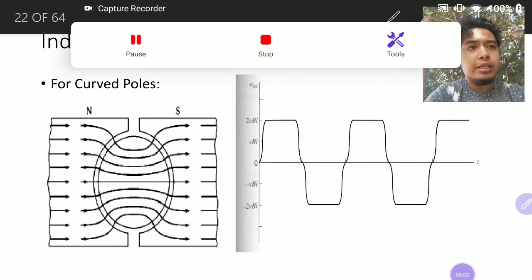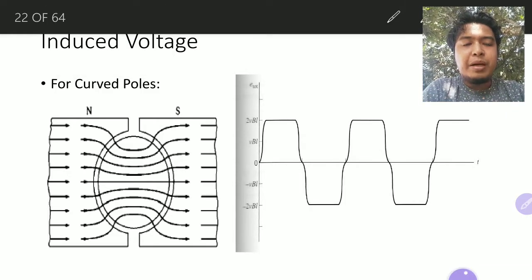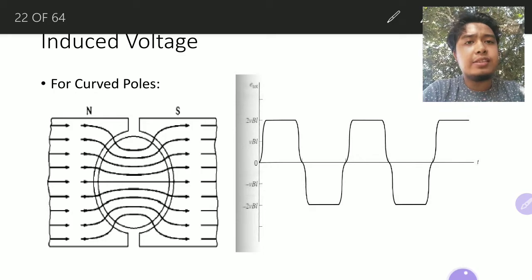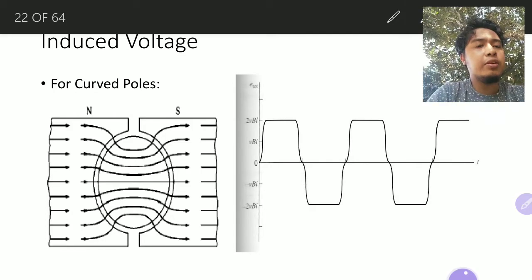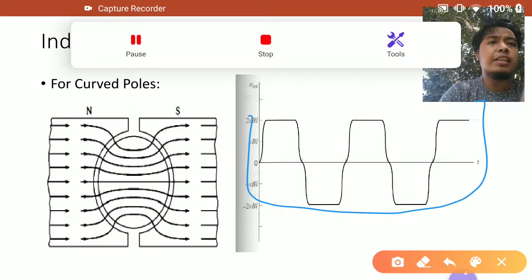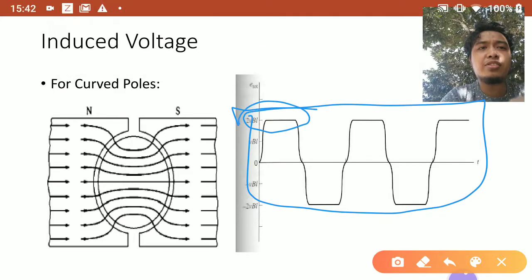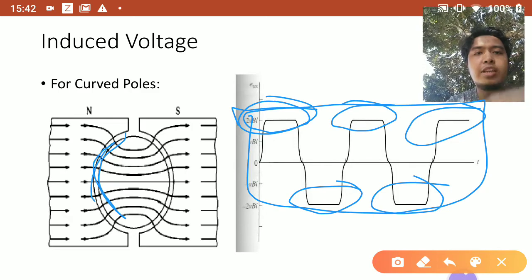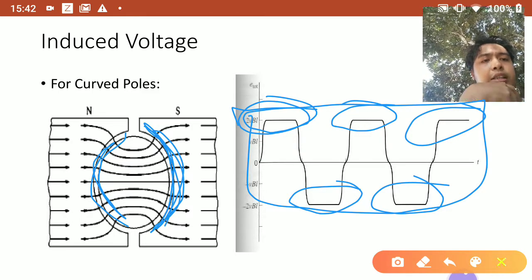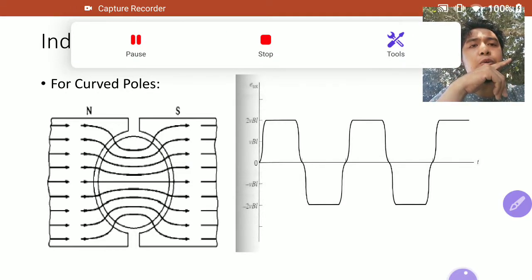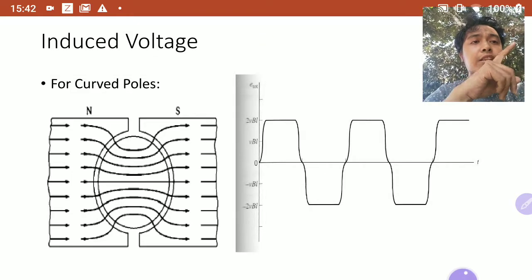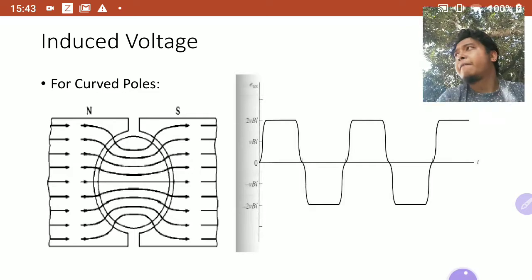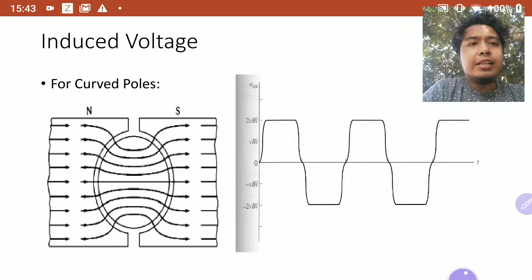In my last video, I showed you how to generate voltage on a DC machine. Well, it's not yet DC because as I showed you, we still have this waveform — it's still AC, but it's flat AC, not sinusoidal. The reason for that is because of the curved poles, which I discussed in my previous video. I also showed you how to use the equations from a linear DC machine and translate them into rotational.